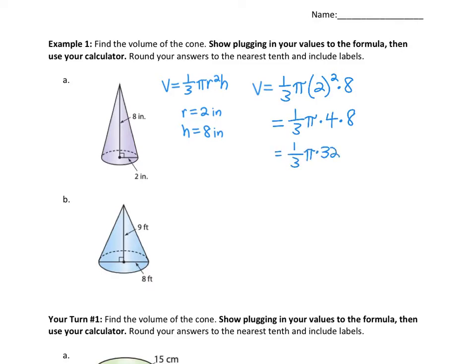Our exact answer in terms of pi — since it's all multiplication we can do it in any order. So one-third times 32 gives a repeating decimal, so we leave it as a fraction: 32/3 π. That's our exact answer in terms of pi, and the units are inches cubed.